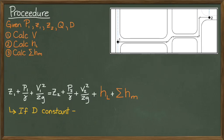If the diameter of the pipe does not change, then the velocity will not change, so the velocity heads cancel out. We can then solve the energy equation for the pressure head at point 2.